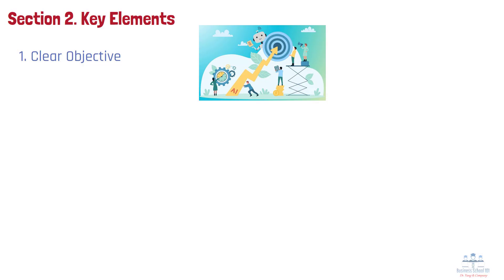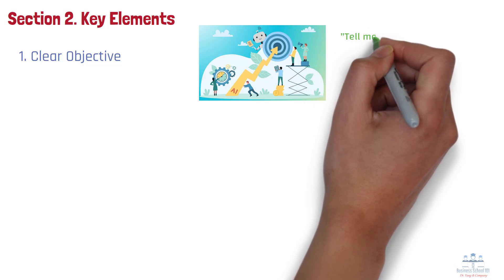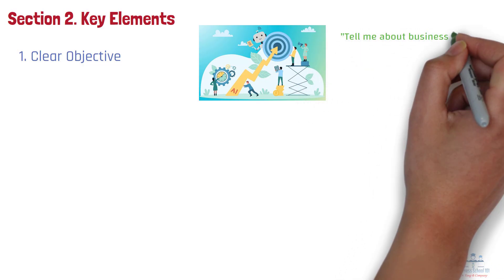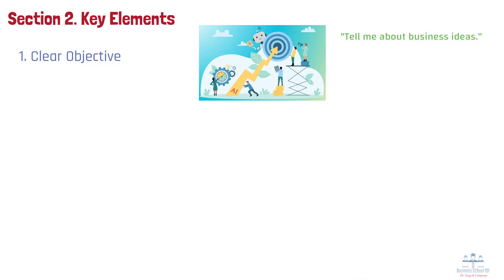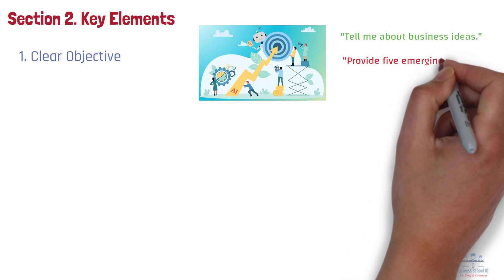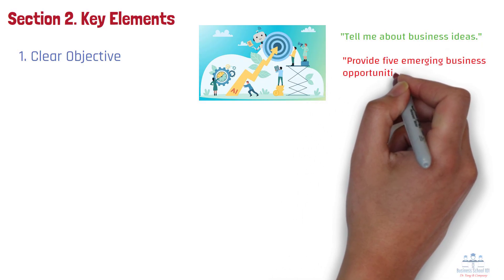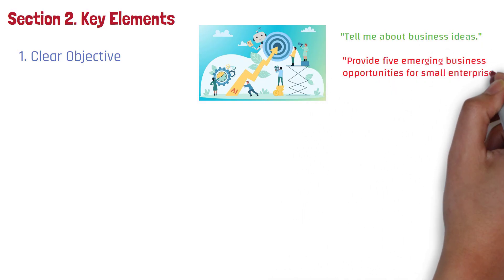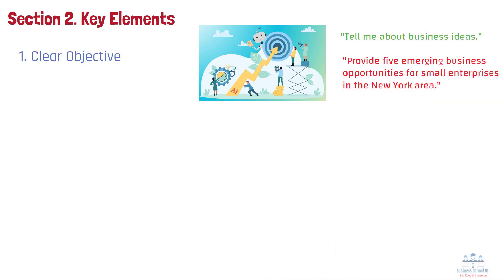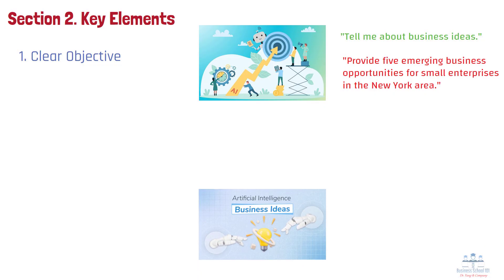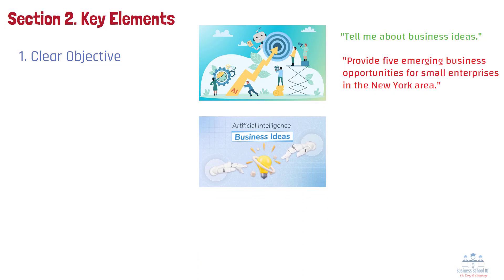For example, instead of a broad request like 'tell me about business ideas,' specify: 'provide 5 emerging business opportunities for small enterprises in the New York area.' This precision helps the AI focus on the particular aspect of business ideas that interests you.